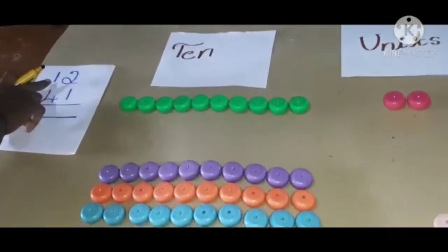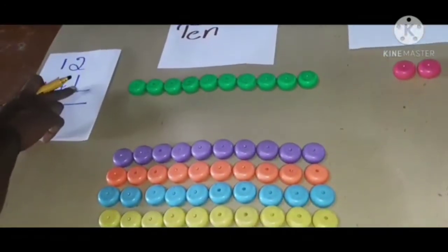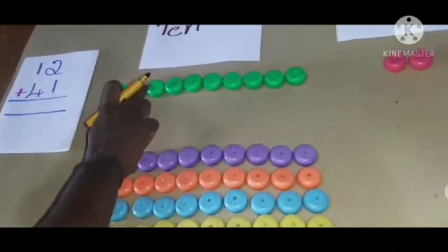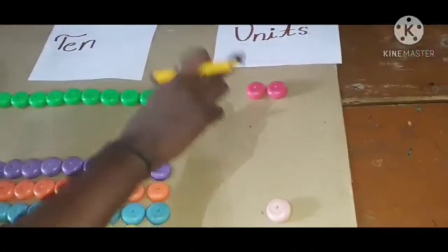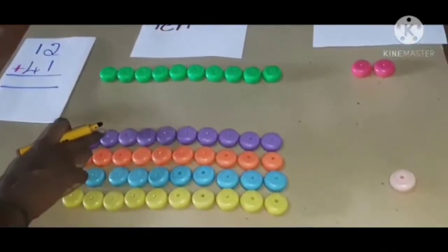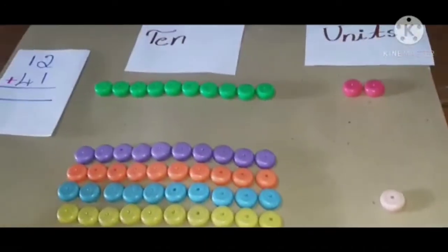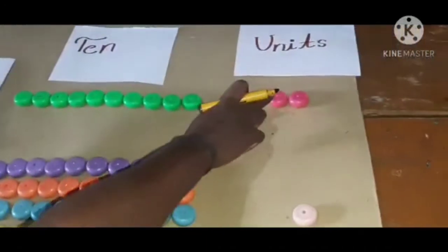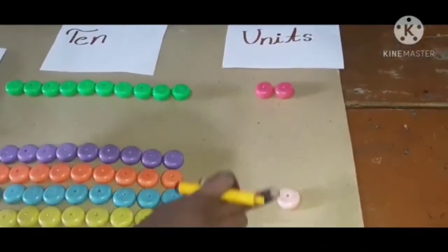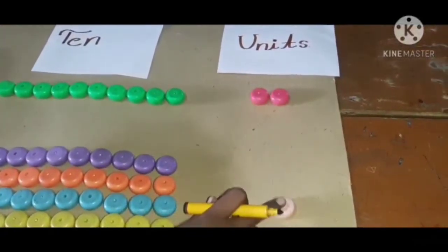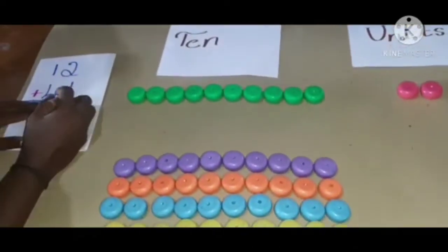Next, 12 plus 41. In 12, 1 ten, 2 units. In 41, 4 tens, 1 unit. Now you can count first units. 2 plus 1: 1, 2, 3. So 2 plus 1, 3.